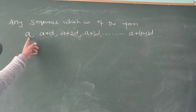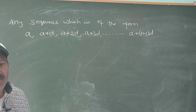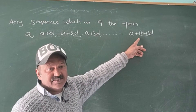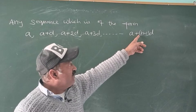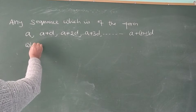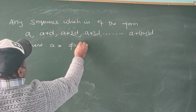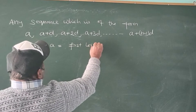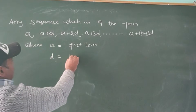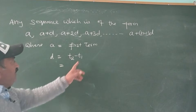Here A is the first term and D is the common difference of the AP. Its Nth term is called the general term, and it is given by: Nth term equals A plus N minus 1 into D, where A is the first term and D equals the second term minus the first term, or the third term minus the second term.